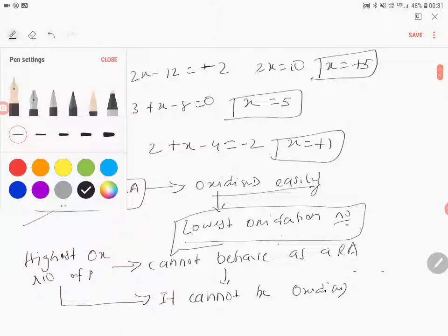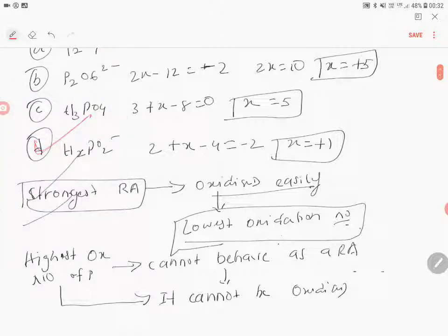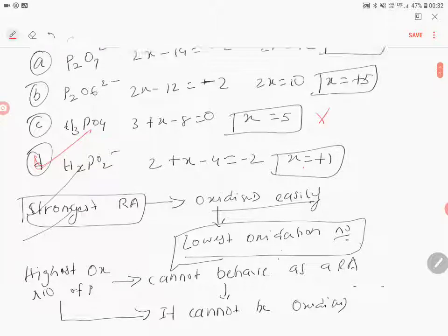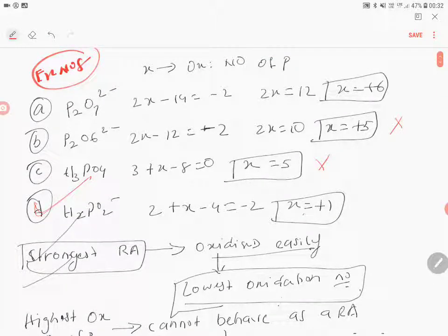Therefore, the strongest reducing agent is that which can be oxidized easily and has the lowest oxidation number. In our options, Option D is the correct answer because it is plus 1. Option C has plus 5, Option B has plus 5, and Option A has plus 6.